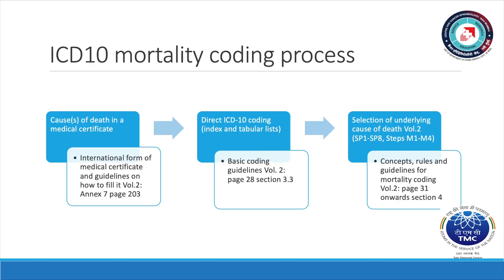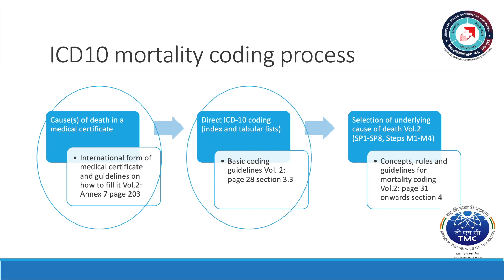Let us review the mortality coding process. This process starts with the international form of medical certificates and guidelines on how to fill it. You can access it in ICD-10, Volume 2, Annex 7, Page 203. This is followed by direct coding. The basic coding guidelines can be found in ICD-10, Volume 2, Page 28, Section 3.3.